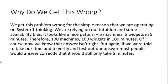So why did we get this wrong? We get this problem wrong because we're operating on System 1 thinking again — relying on our intuition and some availability bias. It looks like a nice pattern: five machines, five widgets, five minutes; therefore 100 machines, 100 widgets, 100 minutes. But now we know that answer isn't right. Again, if we're told to take our time to verify and test out our answer, most people would answer correctly that it would still only take five minutes.